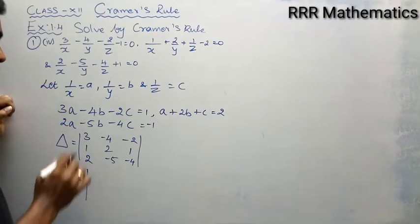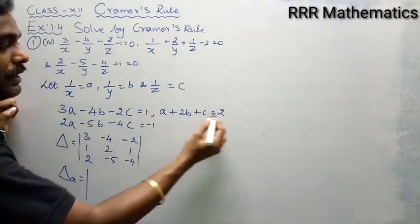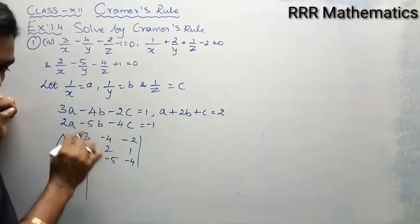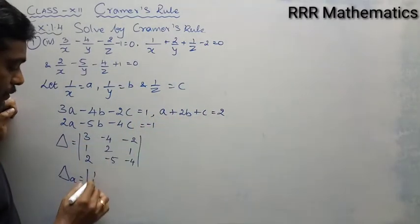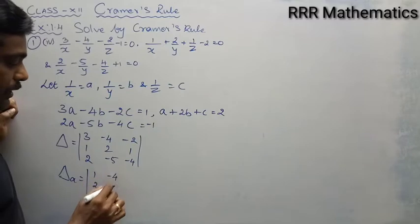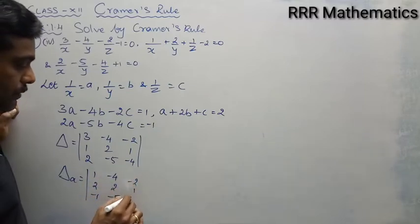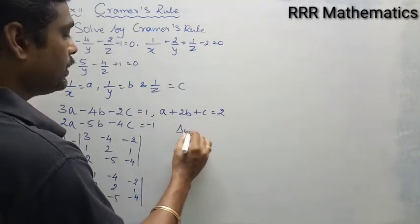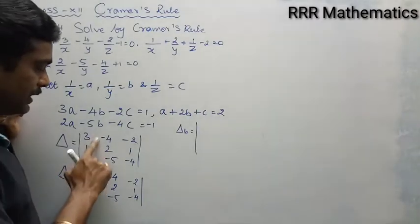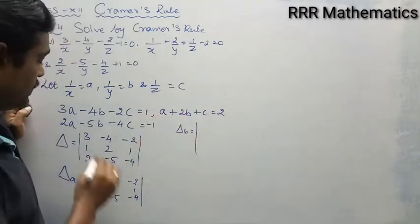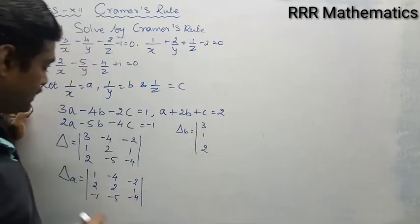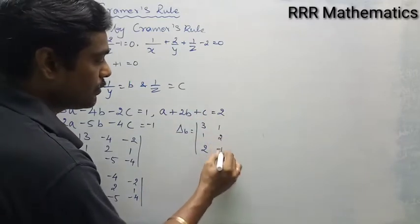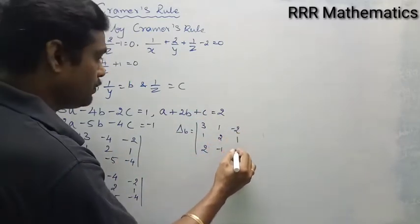Delta_a: replace the first column by the constant values 1, 2, minus 1, while the remaining two columns stay as they are. For Delta_b: replace the second column by the constant values 1, 2, minus 1. The first column remains 3, 1, 2, and the third column remains minus 2, 1, minus 4.